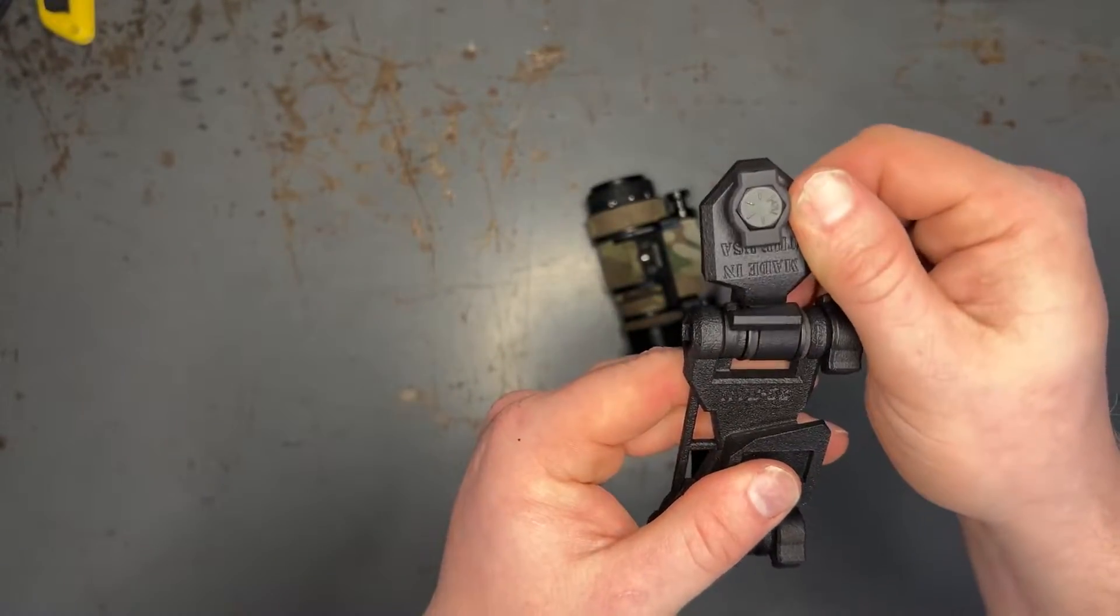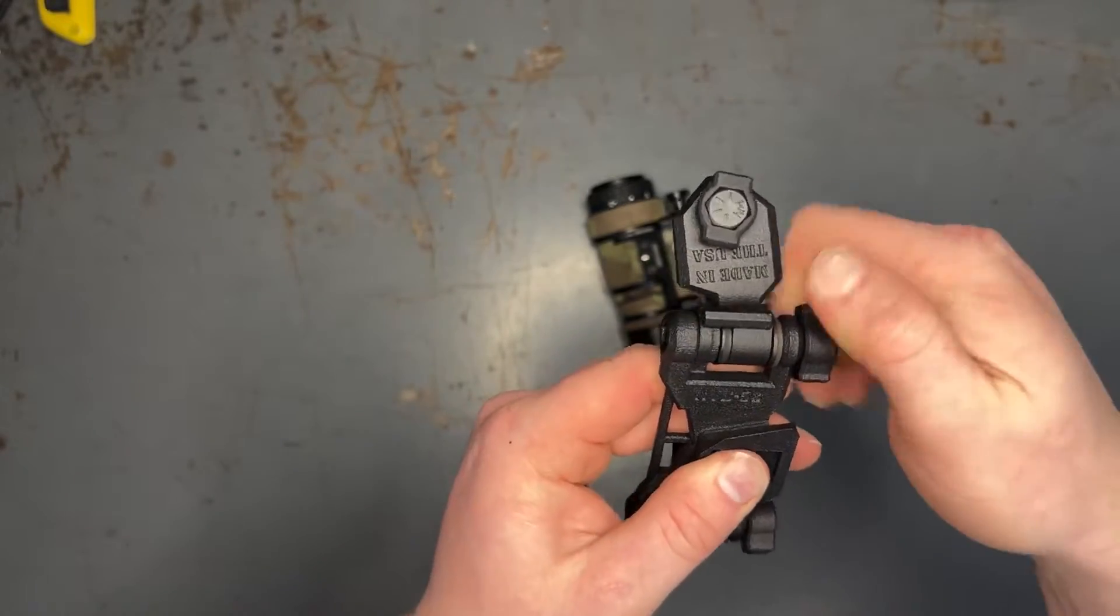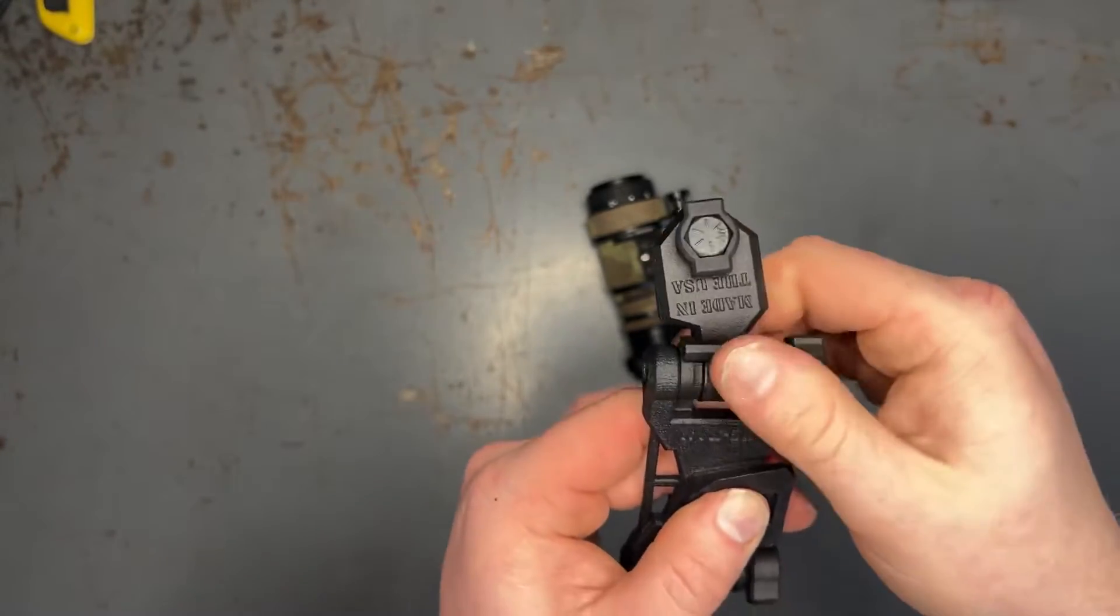Same thing on this side, just move it down into your line of sight, tension the arm down, and then when you articulate it back down it's going to stop nicely.